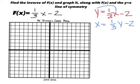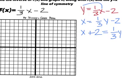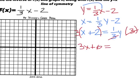From here your goal is to get y completely by itself. Move the minus two to the left to make it plus two, then multiply both sides by three to get rid of the denominator. That gives you three x plus six on the left side.